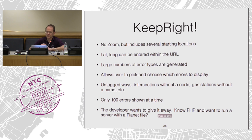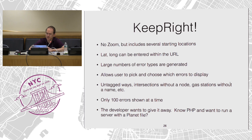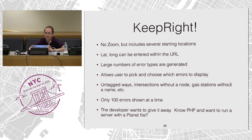The first QA tool I discovered was Keep Right. It does not have a zoom but it has several continental starting locations, and once you get one of those you can apply your own lat/long. It generates a huge number of errors and you can pick and choose with checkboxes as to which areas you want to display. It does untagged ways, intersections without nodes, gas stations without a name, places of worship without a religion, etc. It only shows you 100 errors at a time, starting from the center of the screen and working outward. The developer wants to give it away — if you know PHP and want to run a server with a planet file, he'd love to hear from you.